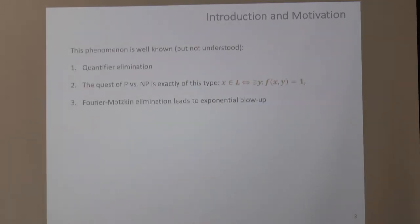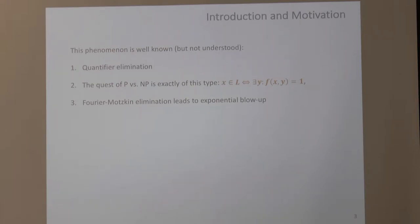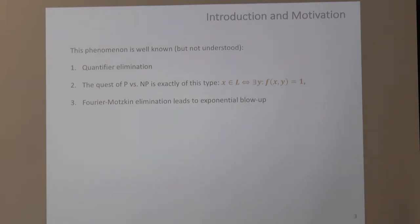This comes down to what I call the inherent complexity of denoting a linear program — or equivalently a semi-definite program with slight adaptation. You want to compress polytopes and find the optimal way of denoting them. This phenomenon is well-known but not well-understood: everywhere you have quantifier elimination, your description blows up. You can even think of P vs NP as a question about quantifier elimination. For linear programs, Fourier-Motzkin elimination typically leads to exponential blow-up when eliminating a linear number of variables.